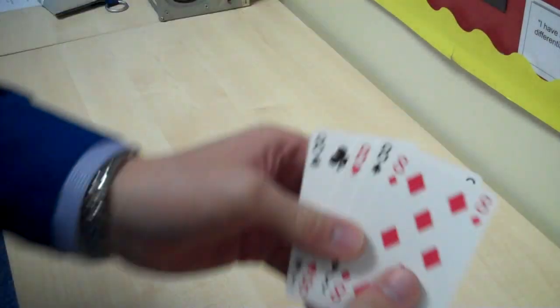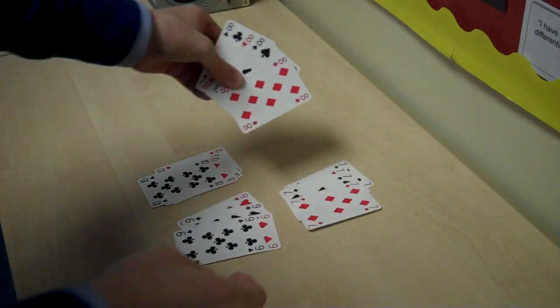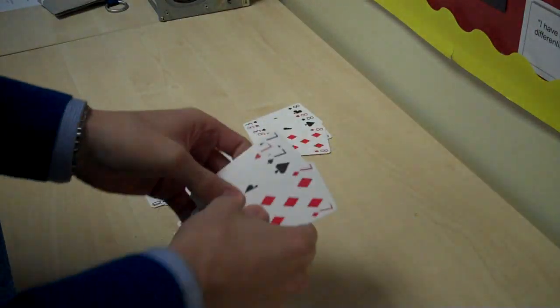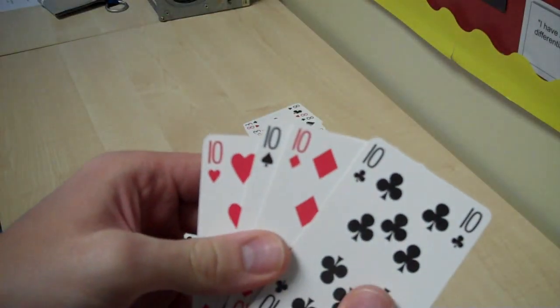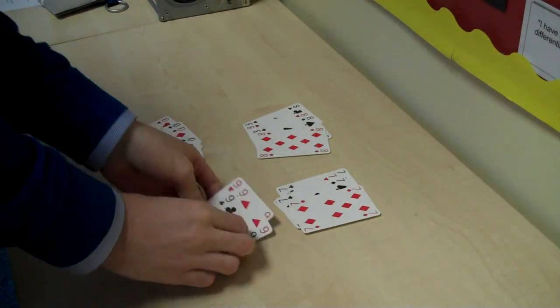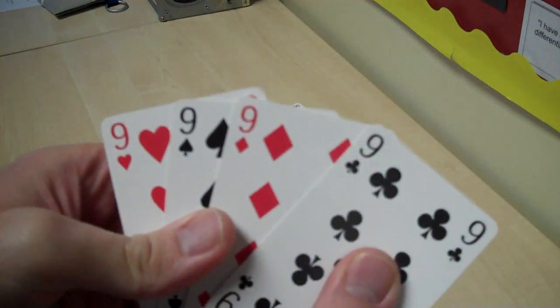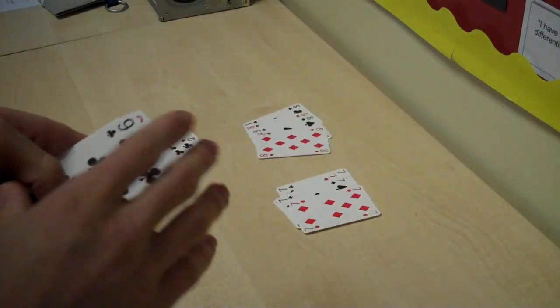And then fourth time. And what you'll notice is we have a pile of eights. We have a pile of sevens. We have a pile of tens. And we have a pile of nines. And they are suitably wowed by that.